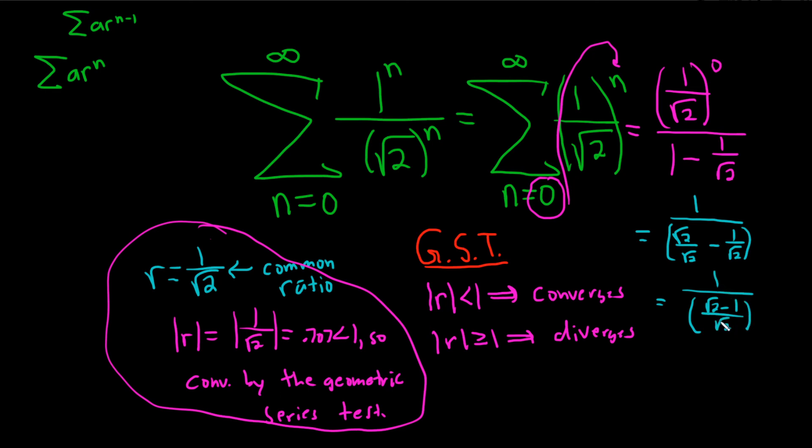And then when you have 1 divided by this you really multiply by the reciprocal. So you have square root of 2 over square root of 2 minus 1. That's it. So you just flip it basically because you're multiplying by the reciprocal. So that would be the sum. That would be the sum of the series. Good luck.